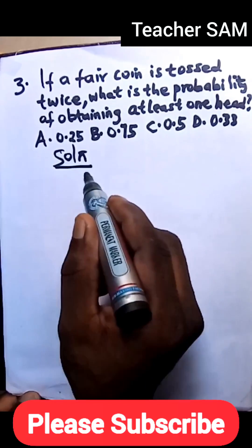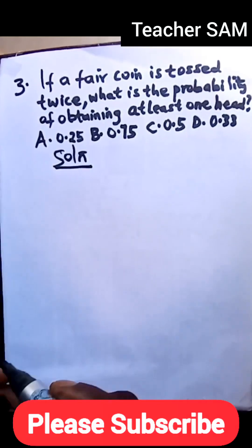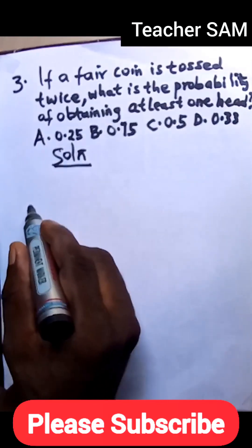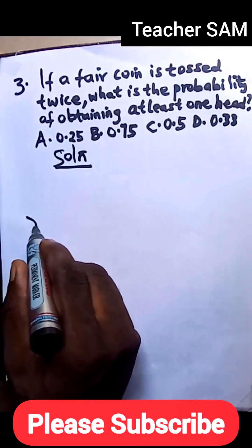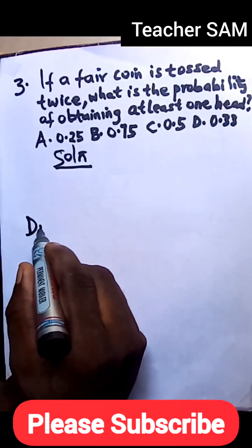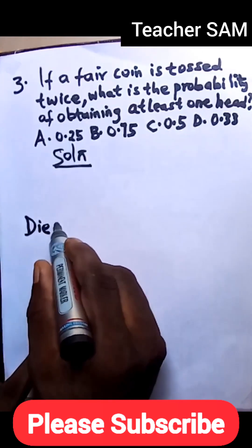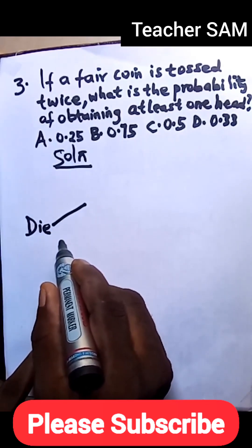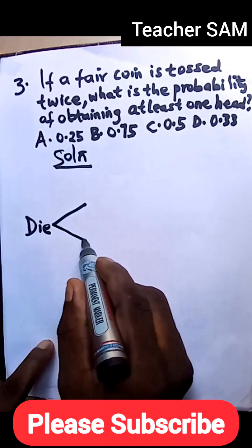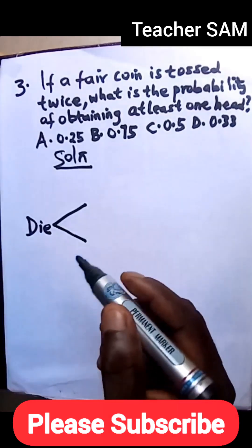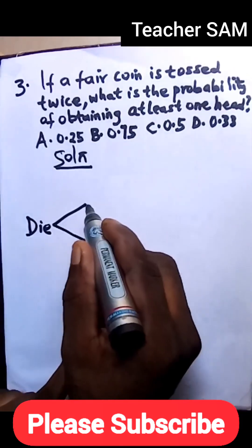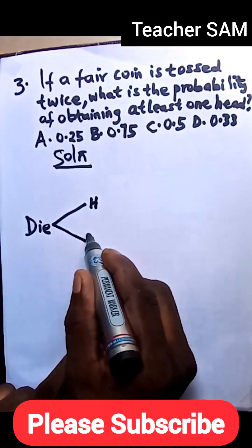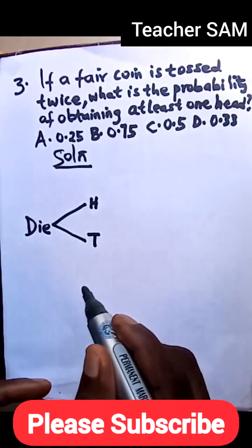Solution. Now when a fair die is tossed—let's say this is our die—and it's tossed twice according to the equation, so let's do the first toss. When we toss a dice, we always get two outcomes, either a head or a tail. So the first toss is going to give us either a head or a tail.